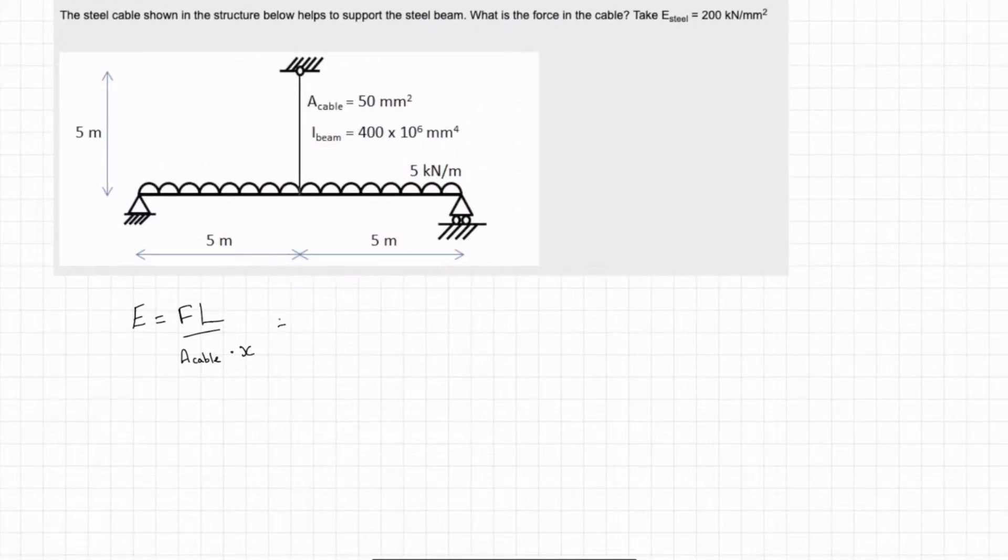So we have f is unknown because that's the force in the cable times L which is the length. So that's 5000 millimetres. That's the length of the cable all over a cable is 50 times x. So that's all equal to 200 kilonewtons per millimetre squared. So we get 200 is equal to 5000f over 550x.